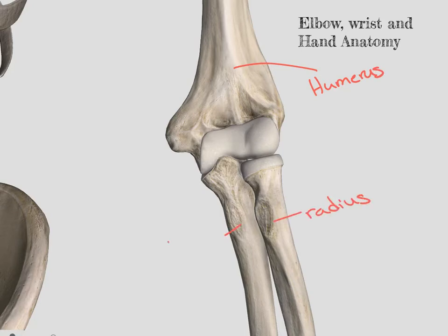It's important to remember that when we are in anatomical position, the ulna will be on the lateral side or the thumb side.